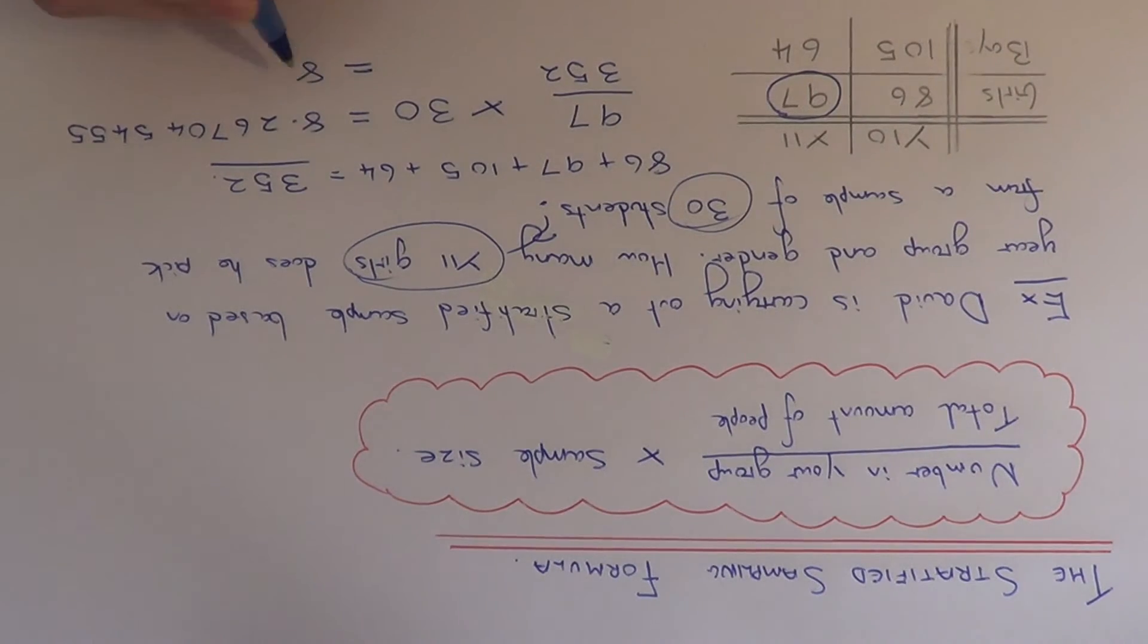So the nearest whole number in this case is 8. So our final answer would be to pick 8 Year 11 girls. Thanks for watching.